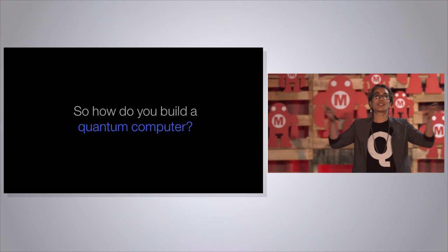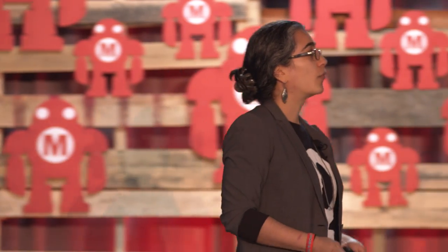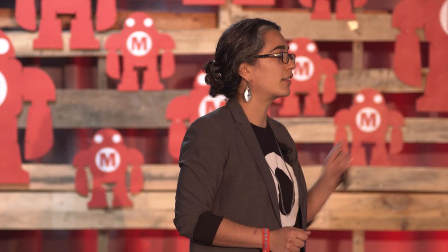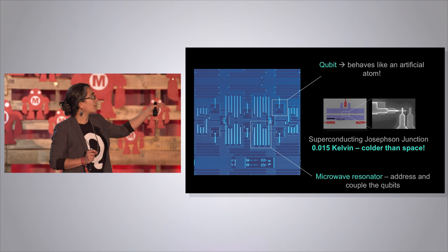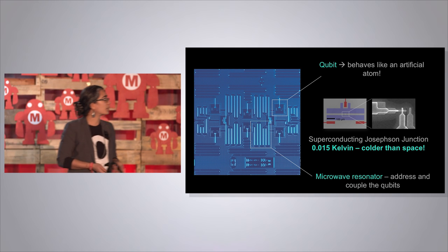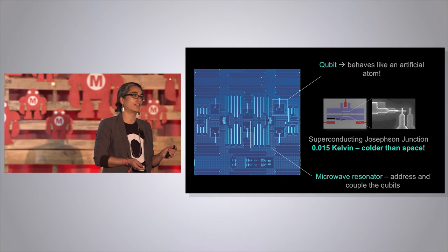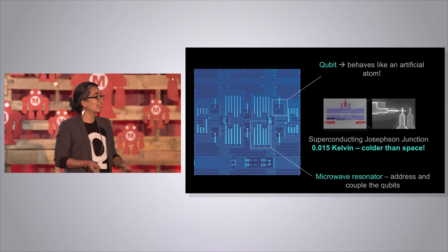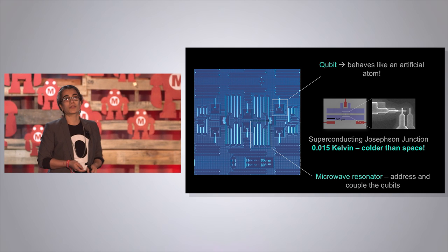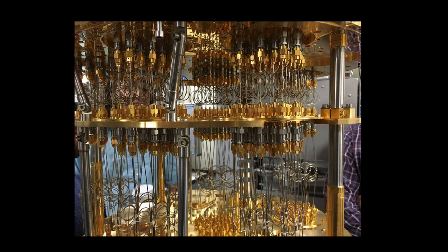How do you actually build a quantum computer? You need qubits that harness quantum mechanics, so we build artificial atoms — superconducting Josephson junctions coupled to microwave resonators. On the chip, you have squares that are your qubits and squiggly lines that are your microwave resonators. We cool this device down to 0.015 Kelvin — significantly colder than outer space, where room temperature is 300 Kelvin. We talk to the qubits with microwaves through microwave cables inside a dilution refrigerator.